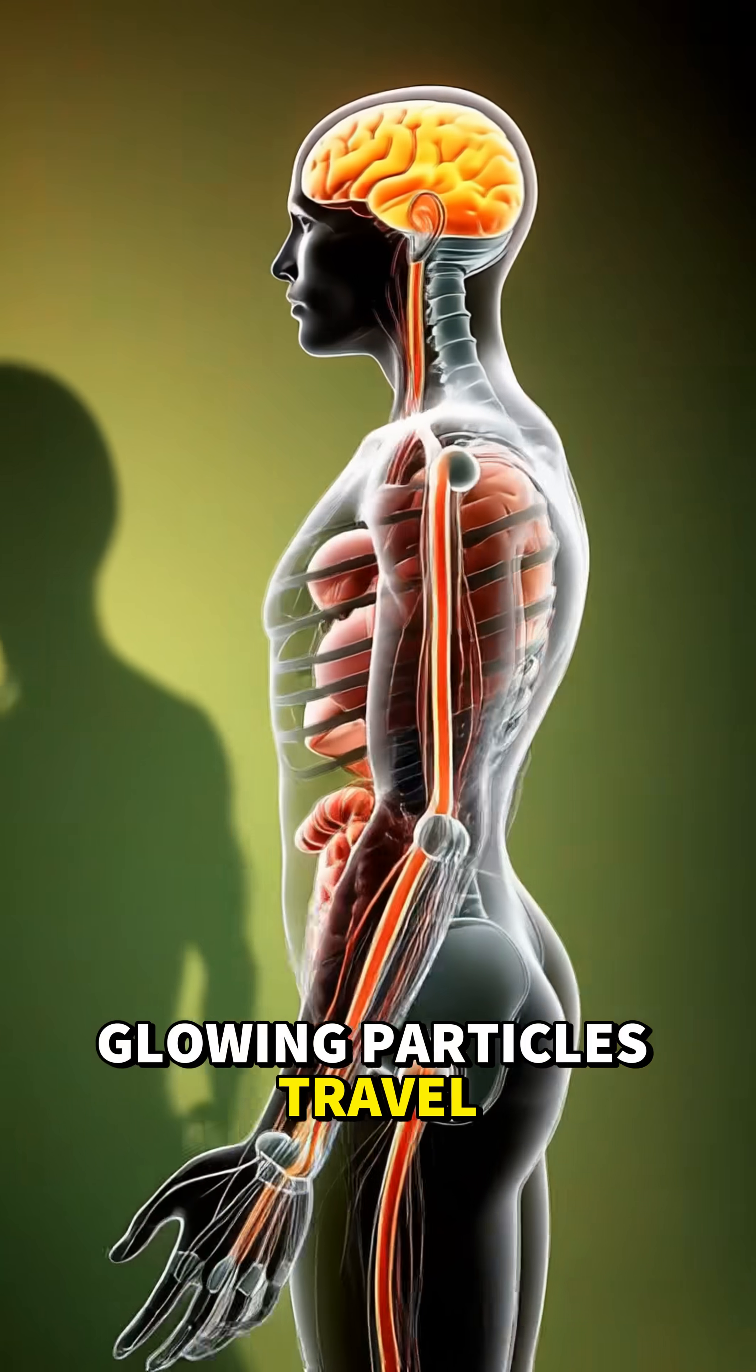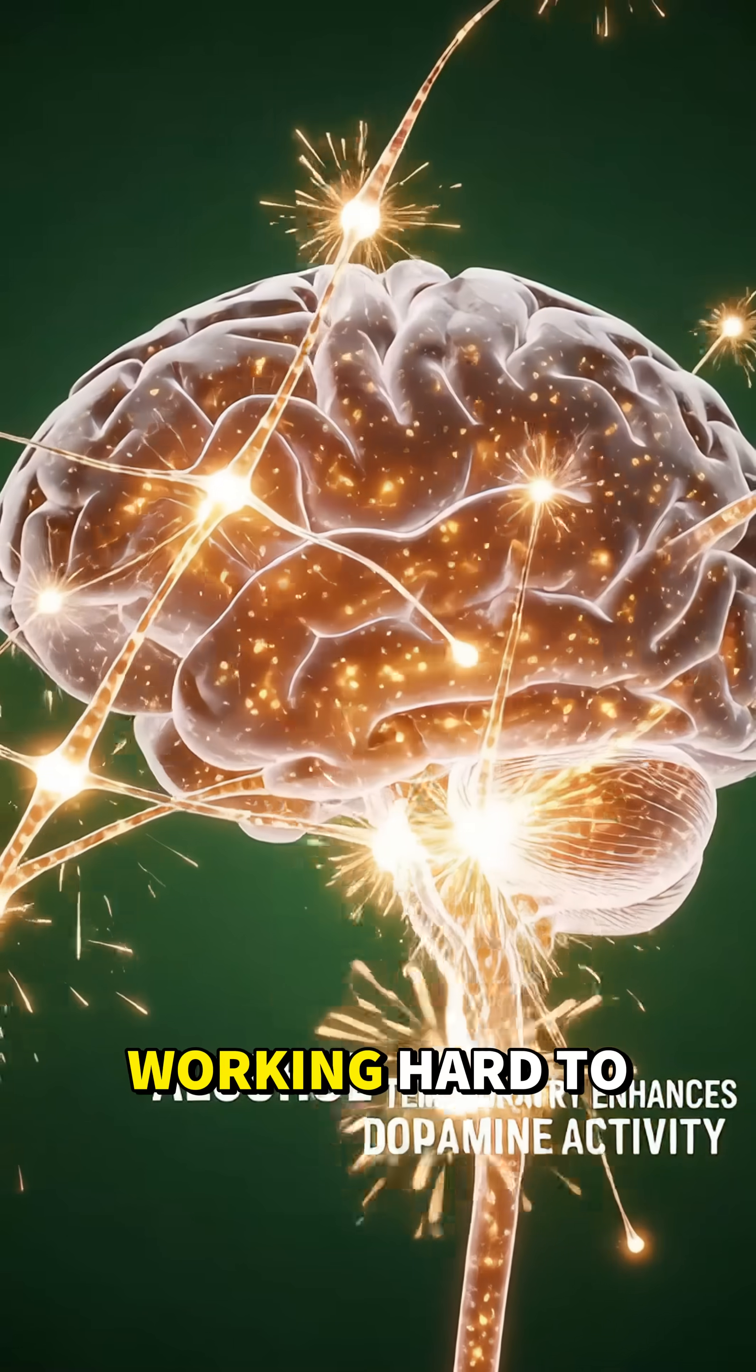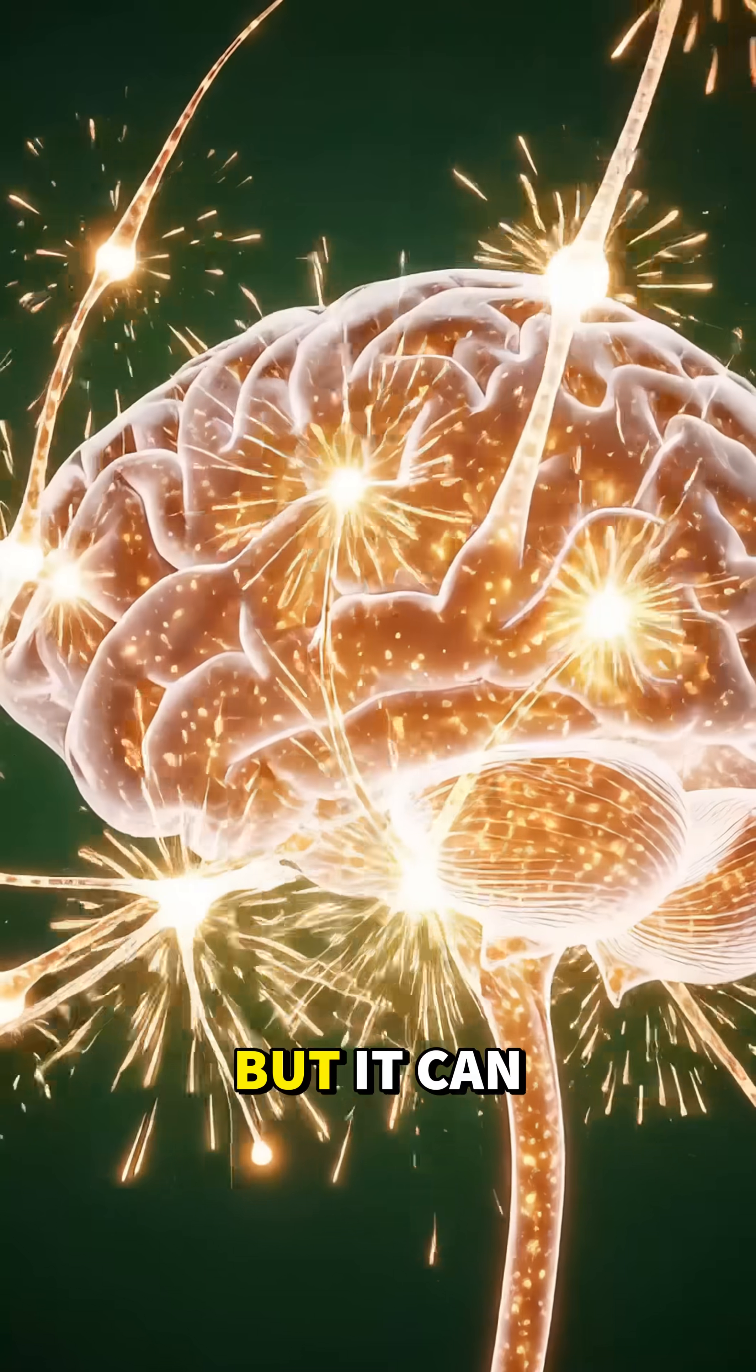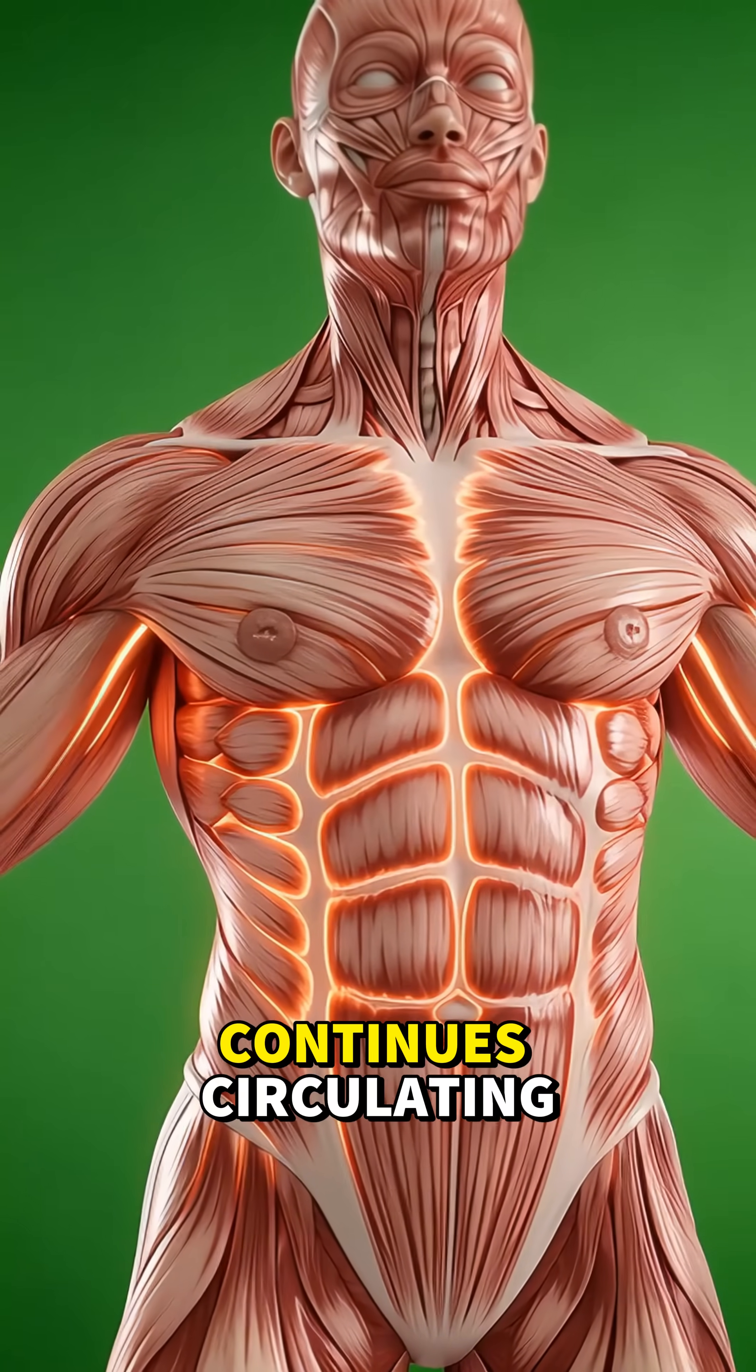Glowing particles travel through the veins, spreading across the body. The liver receives them first, working hard to break alcohol down. But it can only process a limited amount, so excess ethanol continues circulating.